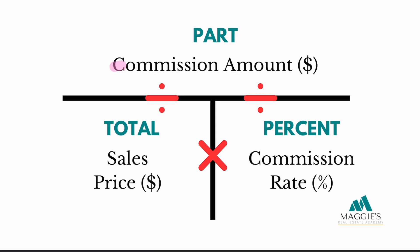Let's explore the key concepts of the T-method. The top portion is where you input the part or portion of the total amount — here you put the commission amount in dollars if given. The left side is where you place the total sales amount or total commission when calculating a broker split. The right side is always where you put the rate or percent. Remember to always convert your percent to a decimal by dividing by 100 before doing any calculations.